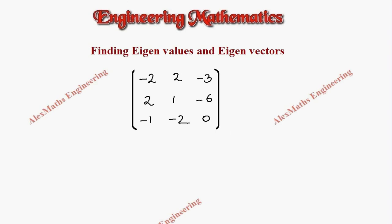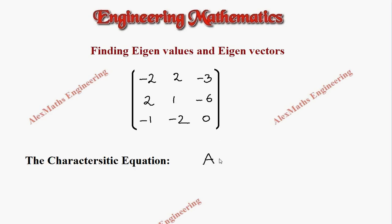Hi students, this is Alex. In this video we are going to find the eigenvalues and eigenvectors for the given matrix of order 3. As a first part, we have to write the characteristic equation, which is the determinant of A minus lambda I equal to 0.